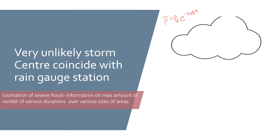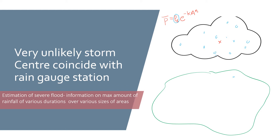In this equation, P₀ is the maximum precipitation depth, called the storm center. The catchment center coincides with the storm center, which has the highest precipitation. Rain gauge stations are installed to measure this.